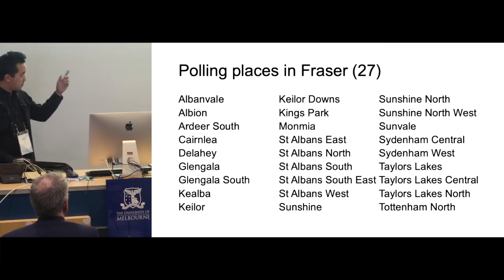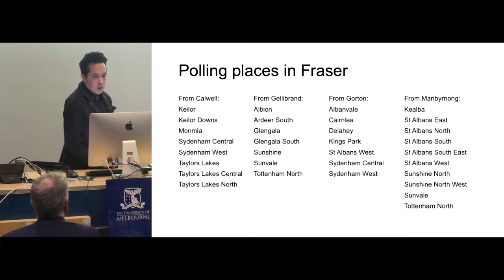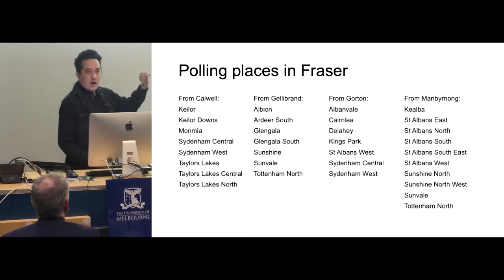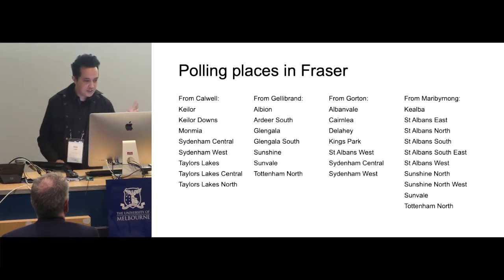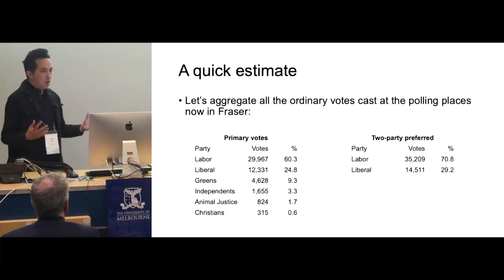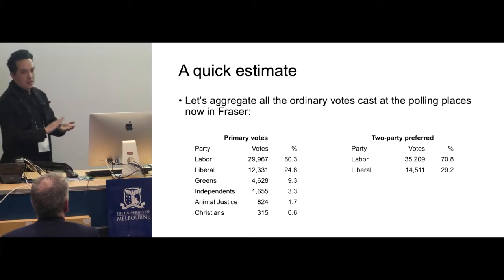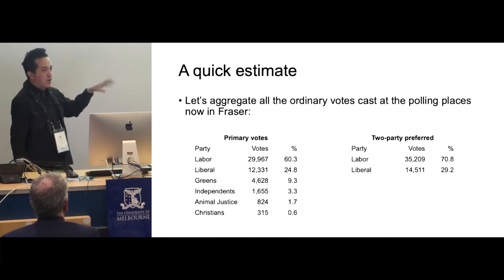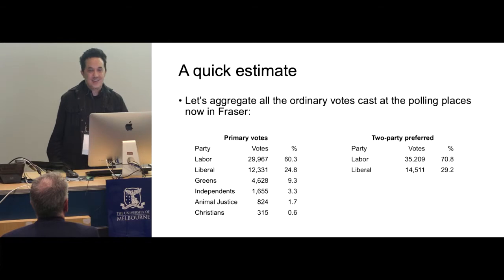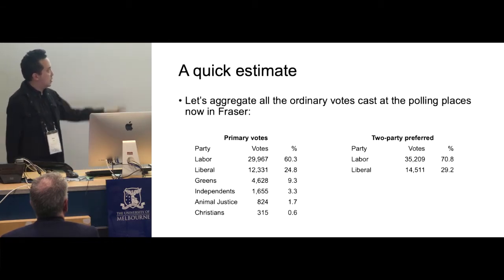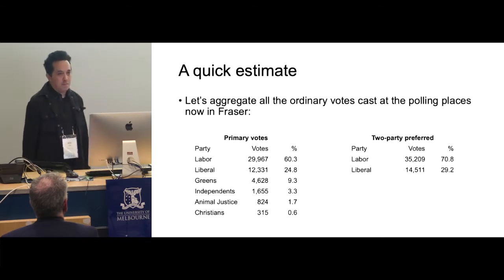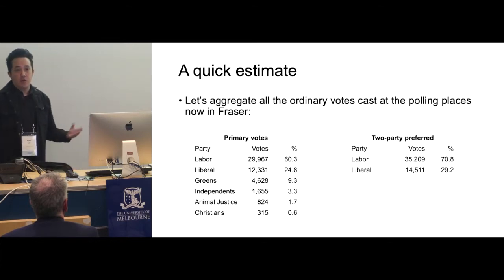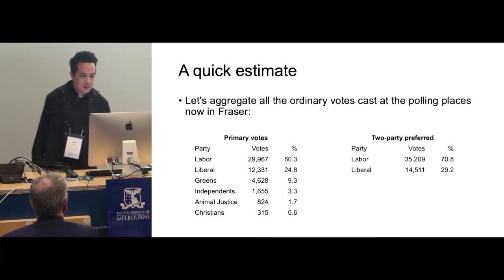There are 27 polling places in Fraser. They break down across those electoral districts — there are more than 27 listed because some were on the border and were used in two divisions, so I think there are 32 listed. What we do is grab all that data, put it together with election results by booth, coordinates, and boundaries — add up all the booths that are now in Fraser, add all the electoral results together, and you get the primary votes or first preference votes and the two-party preferred breakdown. By this method we get 70.8% Labour on a two-party preferred, so that's Labour on a 20.8% margin, which is pretty good for them.